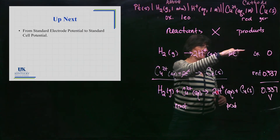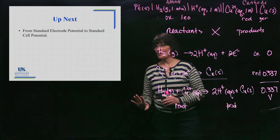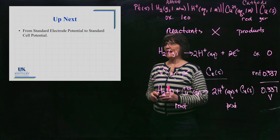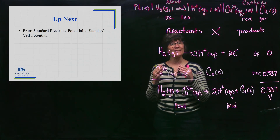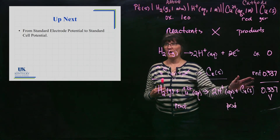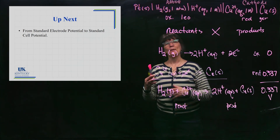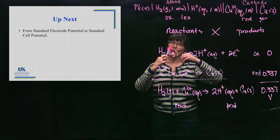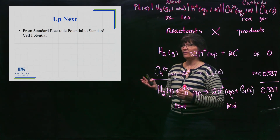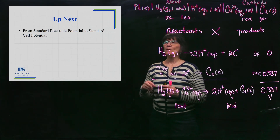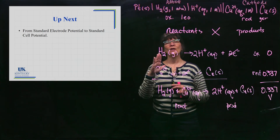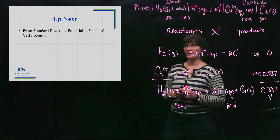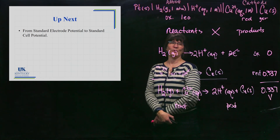Once we have tables full of half-cell potentials, we'll be able to calculate overall cell potentials for any two half cells hooked together in voltaic cells. We'll also be able to make many different readings from those tables without even using numbers. That's what we're going to do next.